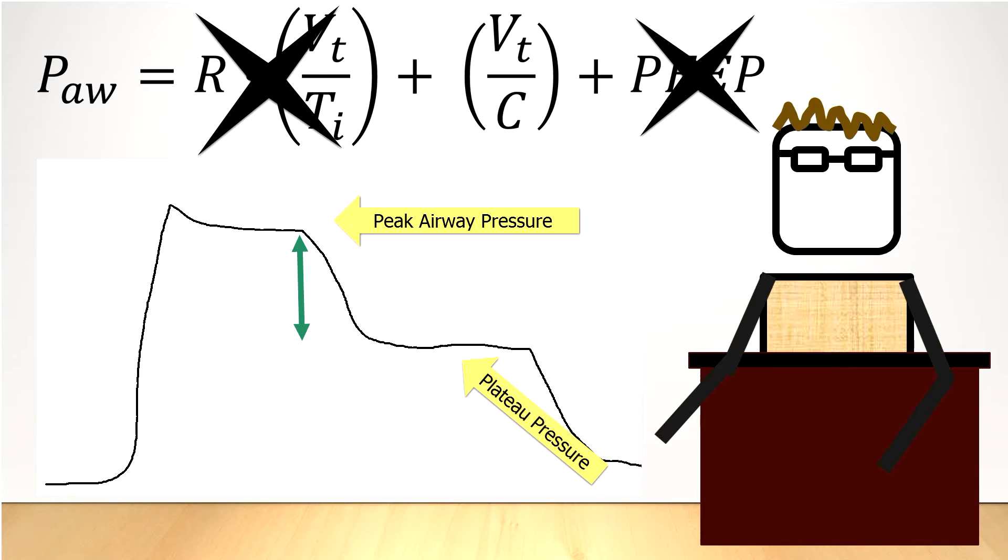This means that if there's an increase in the peak airway pressure and you measure the plateau pressure and it's unchanged from previously, then the increase in pressure that you're seeing is actually due to something going on in the airway, such as increased resistance or a change in the airflow.